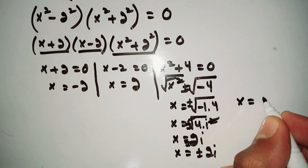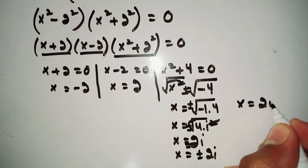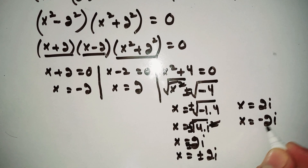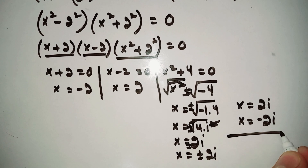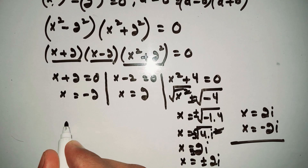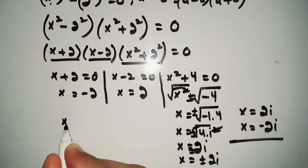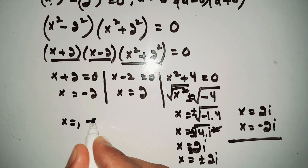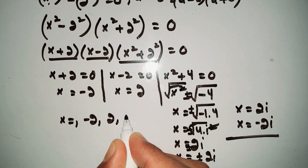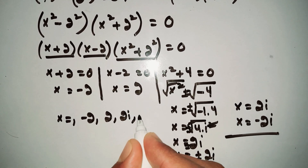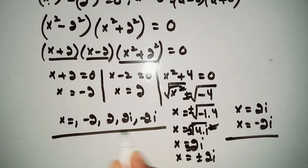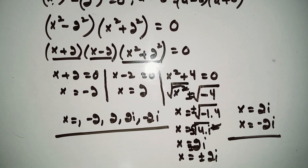So x = 2i and x = -2i. Therefore, the four solutions of the equation x⁴ - 16 = 0 are: x = -2, x = 2, x = 2i, and x = -2i.